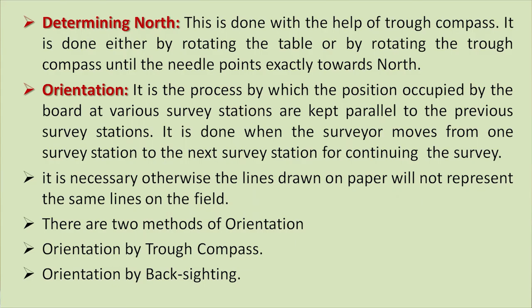Next is determining the north, done with the help of the trough compass — either by rotating the table or rotating the trough compass until the needle points exactly towards north. The next process is orientation of the table — the process by which the position occupied by the board at various survey stations is kept parallel to the previous survey stations. It is done when the surveyor moves from one survey station to the next. Otherwise the lines drawn on paper will not represent the same lines on the field. There are two methods of orientation: first, orientation by trough compass, and second, orientation by back sighting.